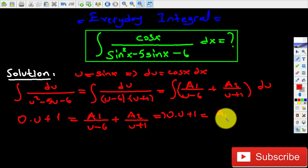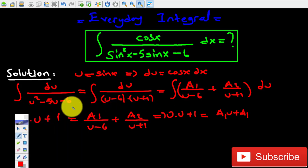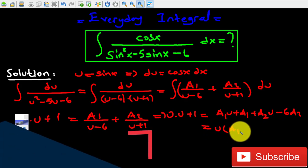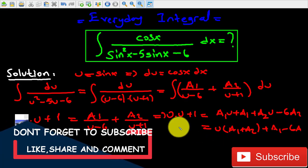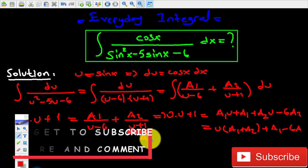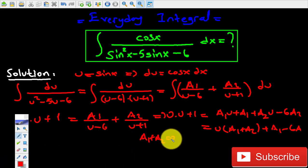And A2(u minus 6). So now let's combine the u terms together. U times (A1 plus A2) plus (A1 minus 6A2). We know that A1 plus A2 is going to be equal to zero because there's no u term, and A1 minus 6A2 is going to be equal to one.